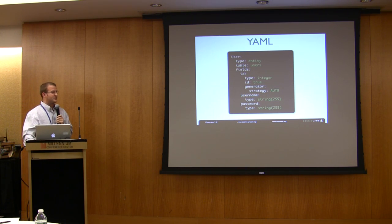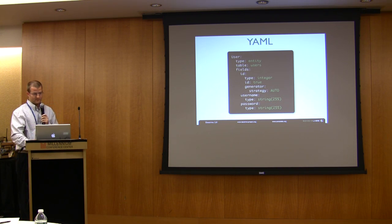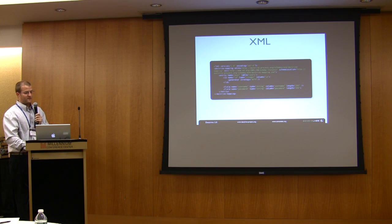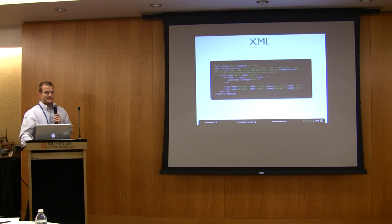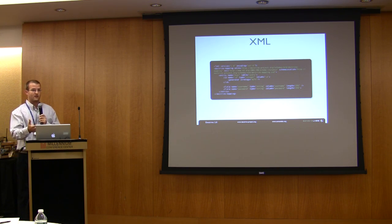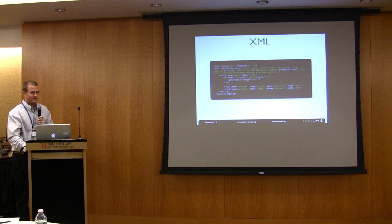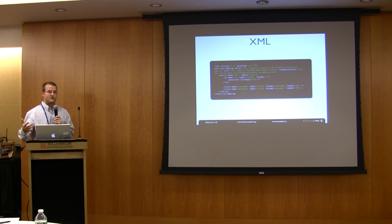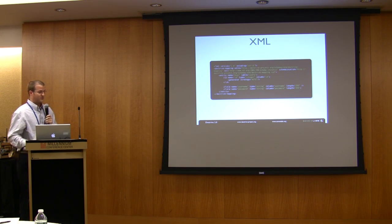So this mapping information is used so that Doctrine knows what to do with each type of object and how it should be managed. Here's the same mapping information if you decided that you liked XML. The biggest differences between all these, XML is my personal favorite because it has IDE auto-completion. It has validation because there's an actual grammar. There's rules that are allowed that you can use in XML. So if you make a mistake, it's going to tell you what your problem is.